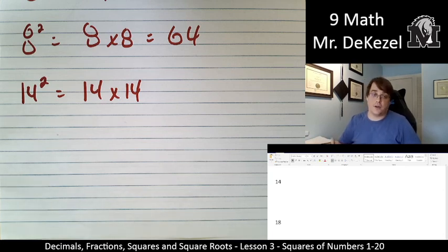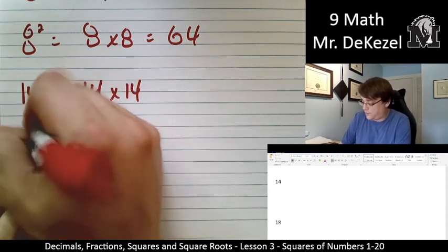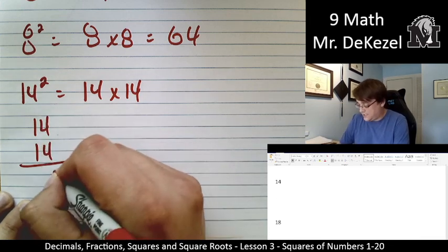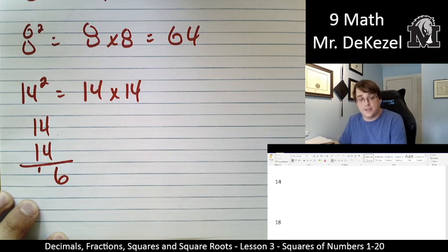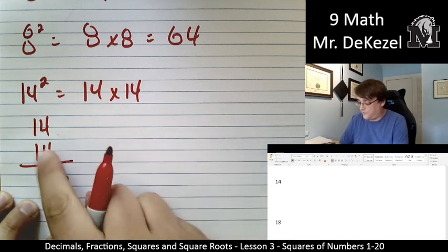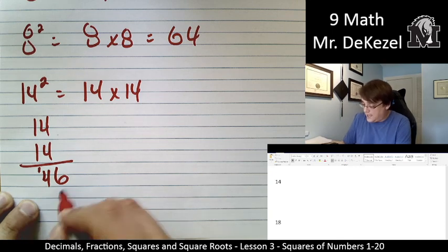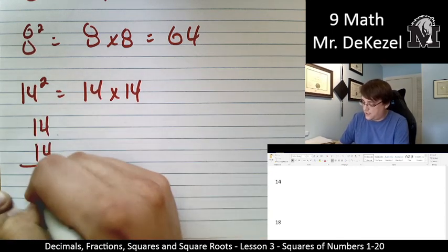So 14, top of 14. 4 times 4 is 16. So I've got my 6 and my little 1 because I'm going to add that. That's the 16. And 4 times 1 is 4. I'm going to add a 0 because I'm moving over. 1 times 4 is 4. 1 times 1 is 1.